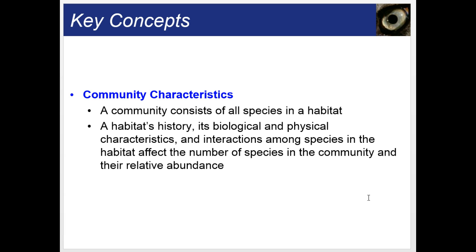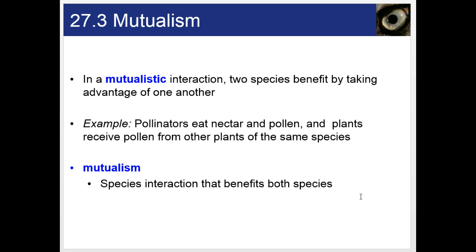Community characteristics: a community consists of all species in a habitat. A habitat's history, its biological and physical characteristics, and interactions among species affect the number of species in the community and their relative abundance. A mutualistic interaction is where both species benefit by taking advantage of one another and neither is harmed. For instance, pollinators eat nectar and pollen, and the plants receive pollen from other plants of the same species, increasing their diversity during reproduction.